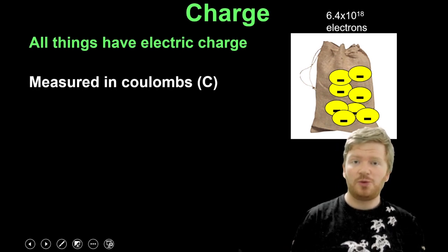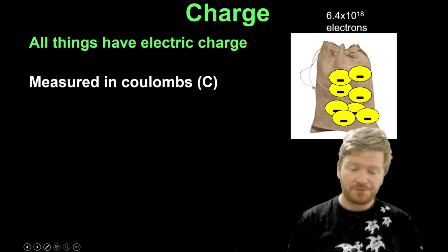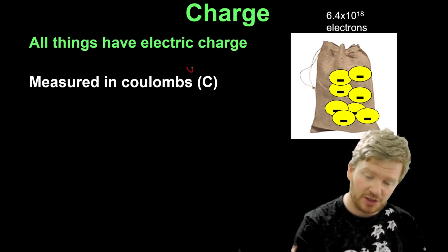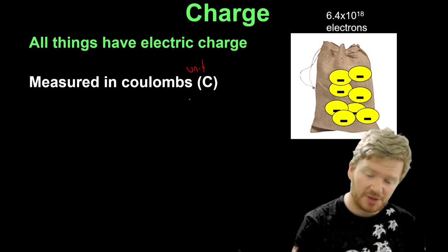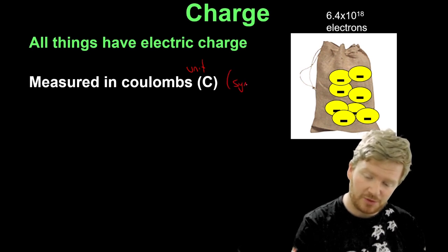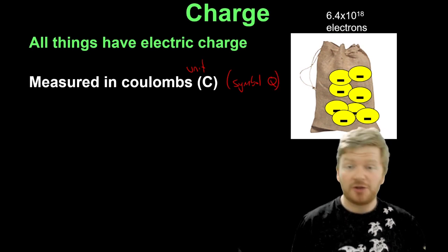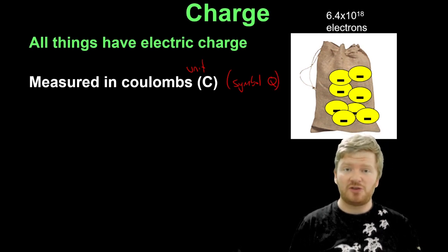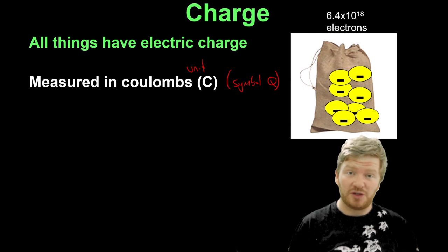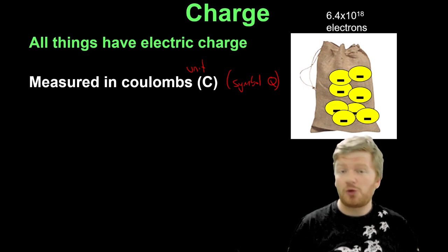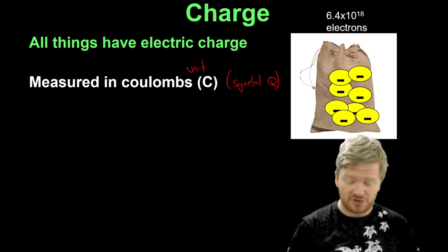Now charge is always measured in Coulombs, which has the unit of capital C, but it has the symbol of a capital Q. The reason it has a symbol of a capital Q is because way back when they were first discovering a lot of this stuff, they thought of charge as stuff moving around, but they called it Q for quantity. So it's a quantity of stuff.